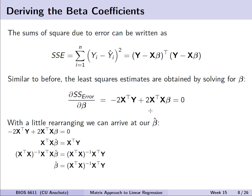Like the algebraic approach, we can derive the beta coefficients in matrix form. The sums of squares due to error SSE is represented as the sum of observed minus predicted values squared. In matrix form, we write it as the vector Y minus the design matrix X times beta, transposed, times that same term — essentially squaring the term in the matrix sense.